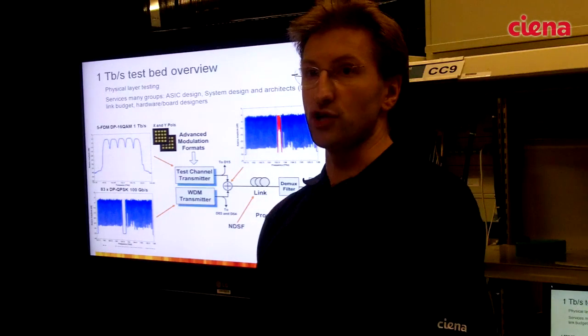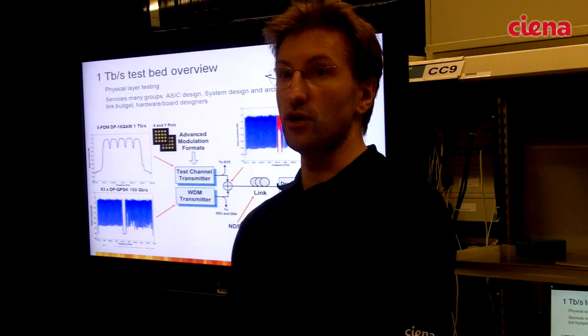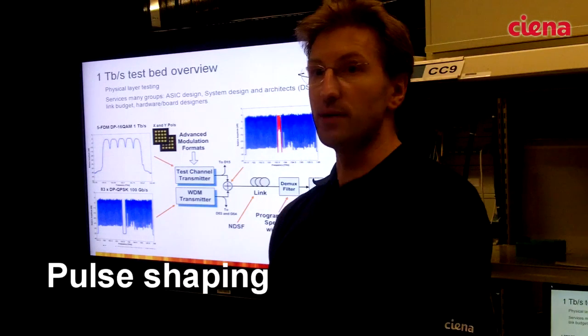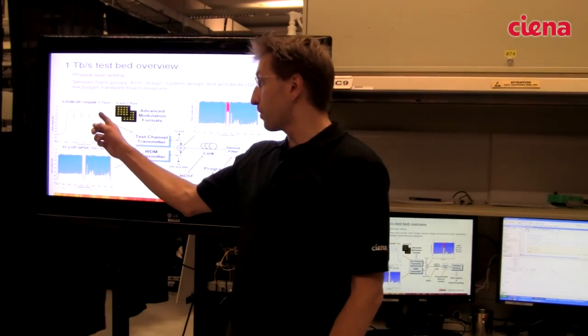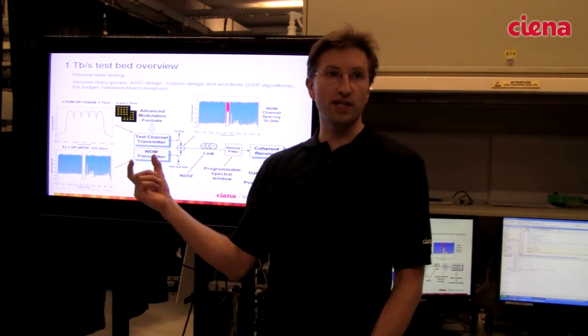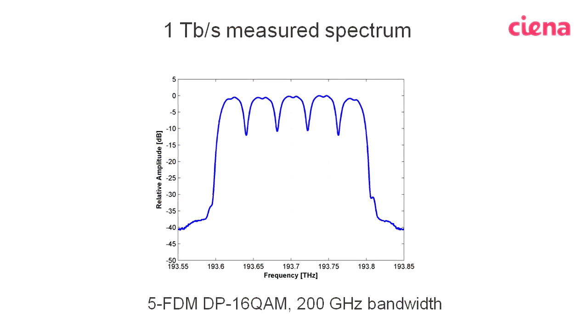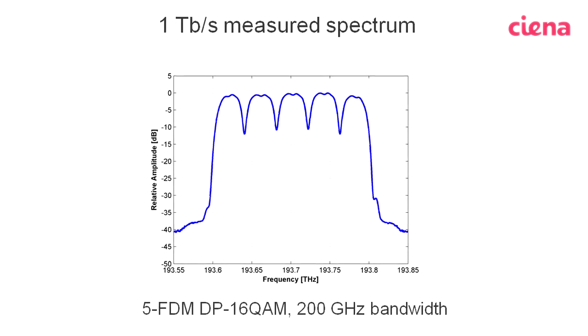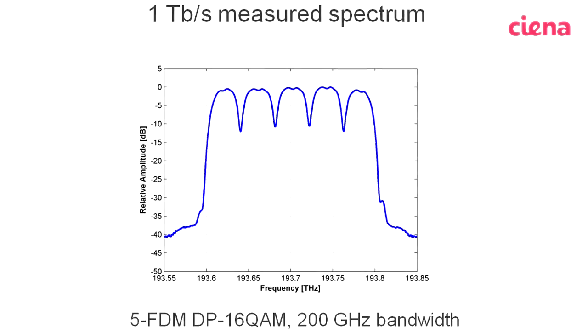The key enabling technology which allows us to put one terabit through 200 gigahertz of optical spectrum is the ability to apply pulse shaping to the subcarriers. The pulse shaping allows us to limit and constrain the spectrum to a nearly rectangular slice and hence bring five subcarriers as close together as possible.